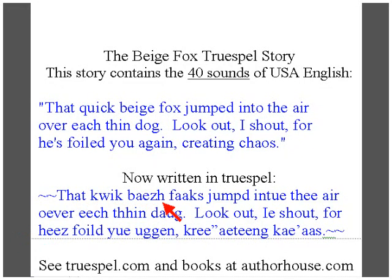Beige — ZH is recognized in phonetics as spelling the J sound, the rarest sound of English. The A sound in beige is represented in True Spell by moving the silent E over to the letter it makes long. So that's how you spell the A sound.